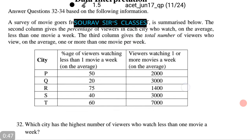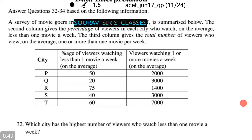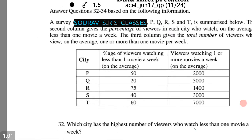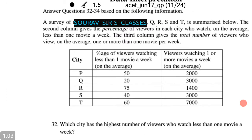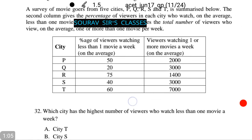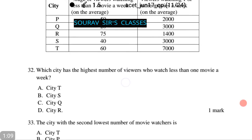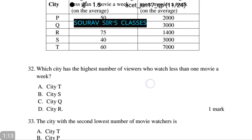Let us see what the data gives us. Percentage of viewers and viewers watching one or more movies a week. Let us see what the first question asks of us. Which city has the highest number of viewers who watch less than one movie a week? The answer will be city T.